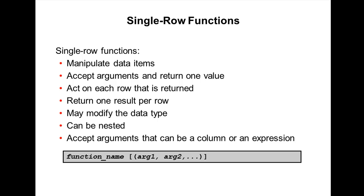Single row functions are used to manipulate data items. They accept one or more arguments and return one value for each row returned by the query. An argument can be a user-supplied constant or variable value, a column name, or an expression. You can pass a number, a variable value, a column name, or an expression to the function.